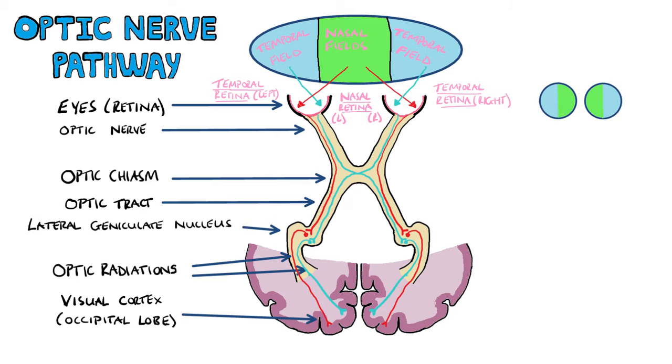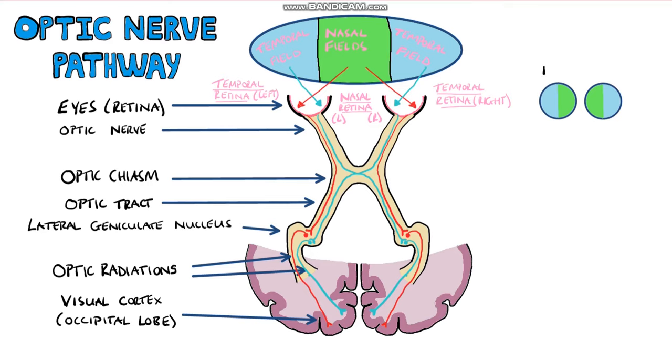Now let's look at what happens when we have lesions in different locations. You can work it out based on which bit of the visual field the neuron that has the lesion is carrying information on.